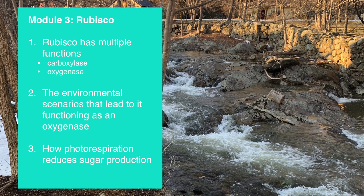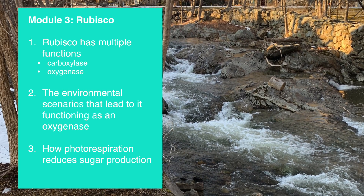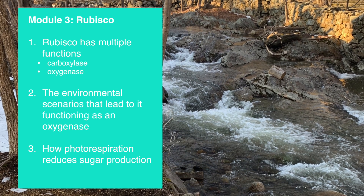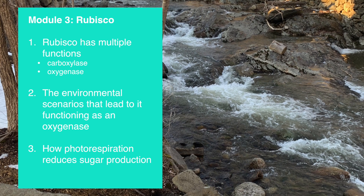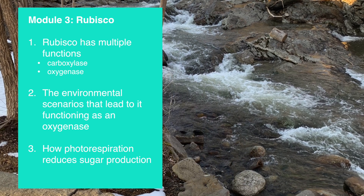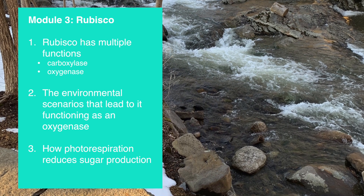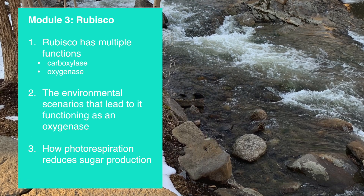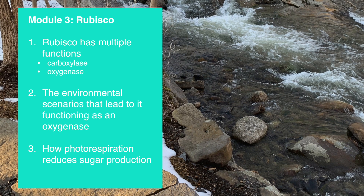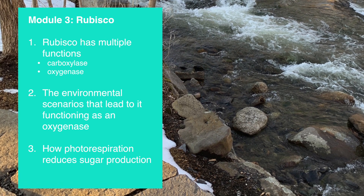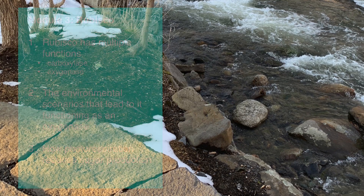That's it for today's module. Your main takeaway should be that rubisco, while really important in the Calvin cycle, can have dual roles. One role is really efficient when it's acting like a carboxylase. In the other role, when it's acting like an oxygenase, it can lead to major inefficiencies in the Calvin cycle and ultimately lead to a process known as photorespiration. When this happens, we have an overall decrease in sugar production.